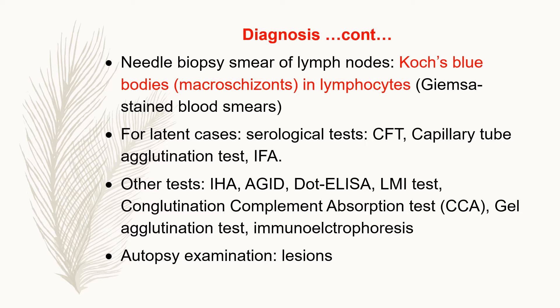For latent cases, various serological tests can be performed: CFT (Complement Fixation Test), capillary tube agglutination test, and IFA (Indirect Fluorescent Antibody test) are the most important. Many other tests are also available: IHA, AGID, DOT-ELISA, LMI test, Conglutination Complement Absorption test, CCA, gel agglutination test, and Immunoelectrophoresis.